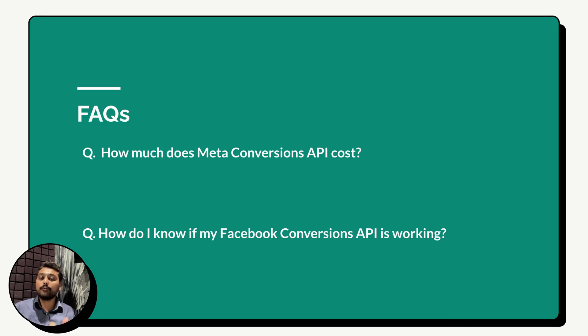Next question: how do I know if my Facebook Conversions API is working? To verify, navigate to your Events Manager and check the event match quality of the server-side events and how effectively data is being sent through the Conversions API. That will give you a clear picture of whether your Facebook Conversions API is working correctly. All relevant links — the community, related videos on how to set up Conversions API, and links to book a demo or start a free trial — will be available in the description.